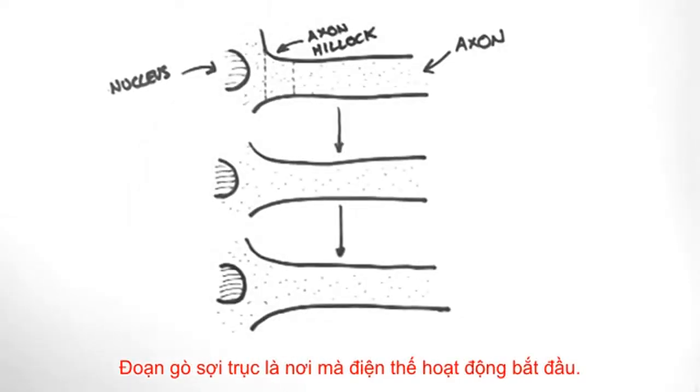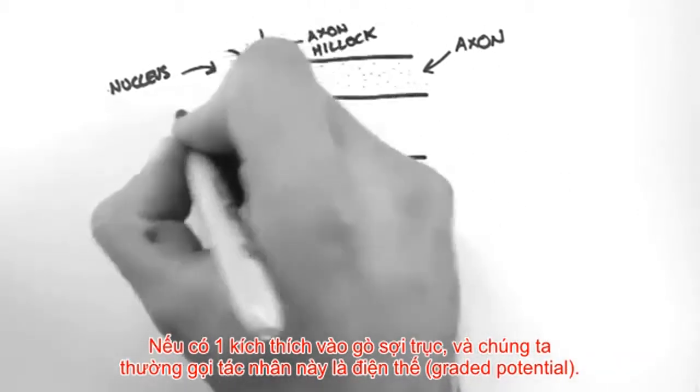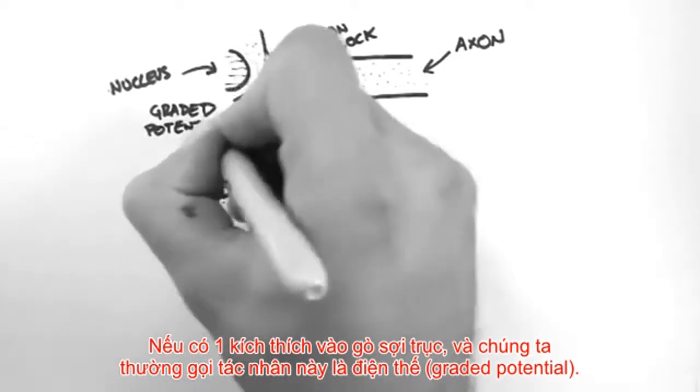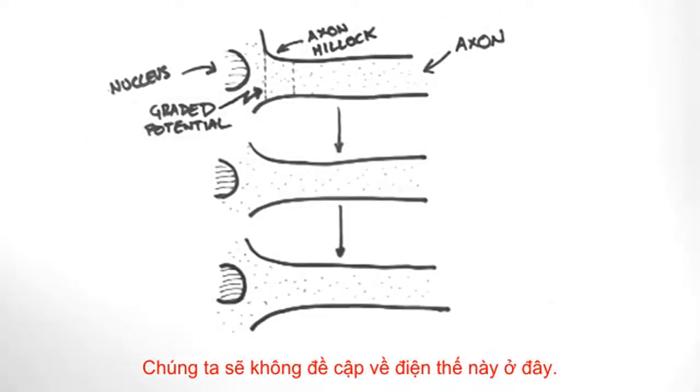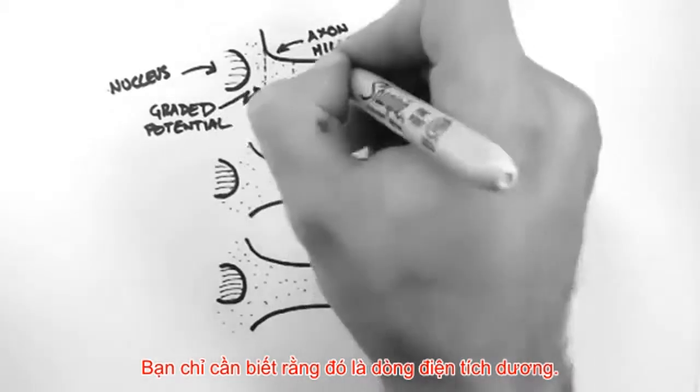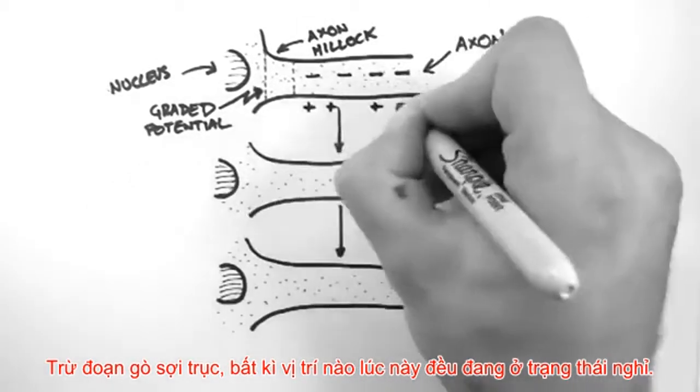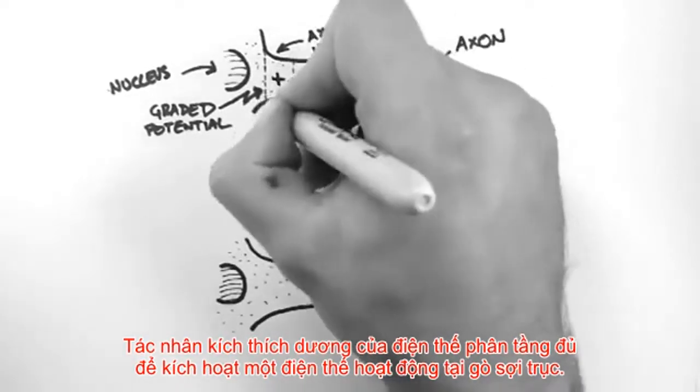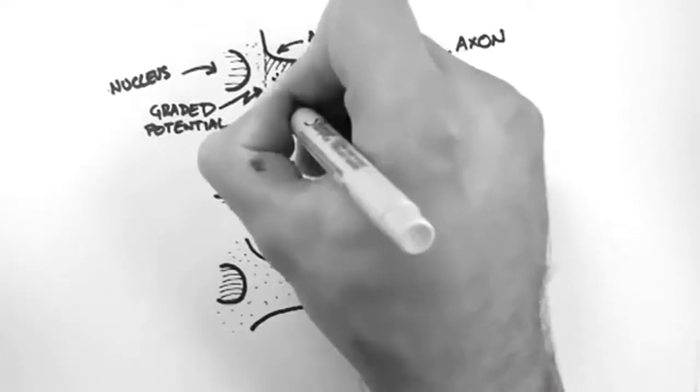The axon hillock is where action potentials begin. So a stimulus is applied to the axon hillock, and usually this stimulus is what we call a graded potential. We're not going to talk about graded potentials in this tutorial, but just know that they are a flow of positive charge. Now everywhere but the axon hillock, the membrane is at its resting membrane potential.